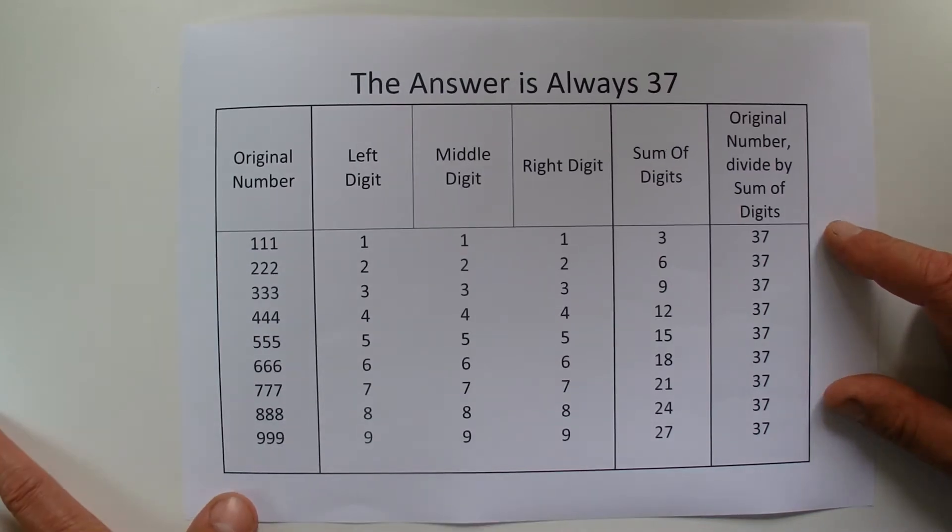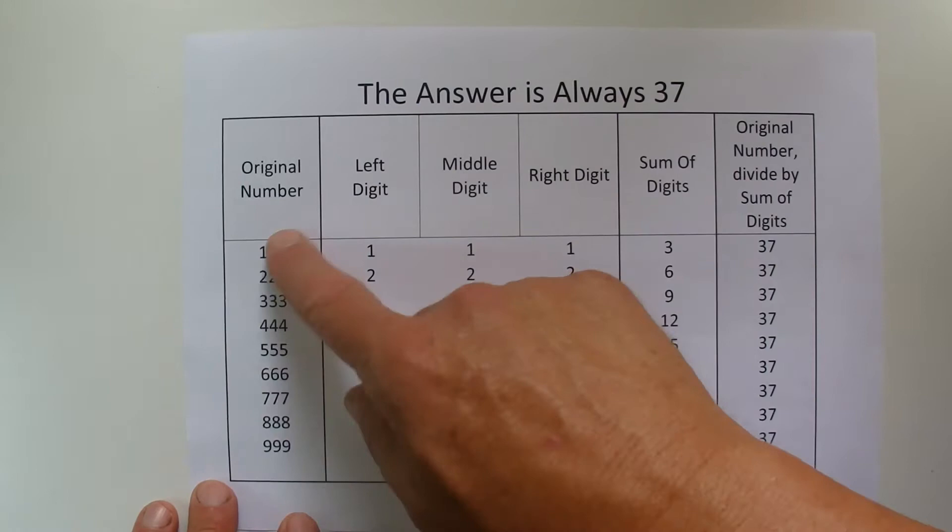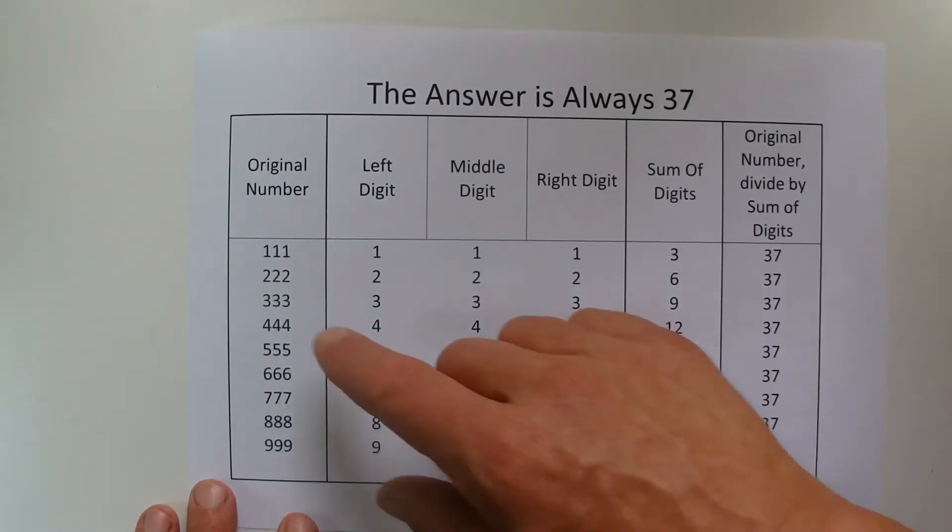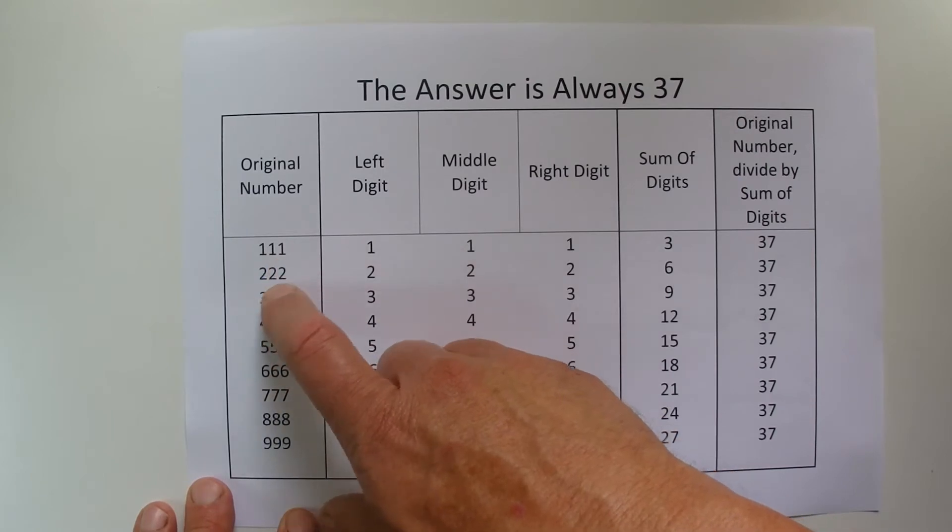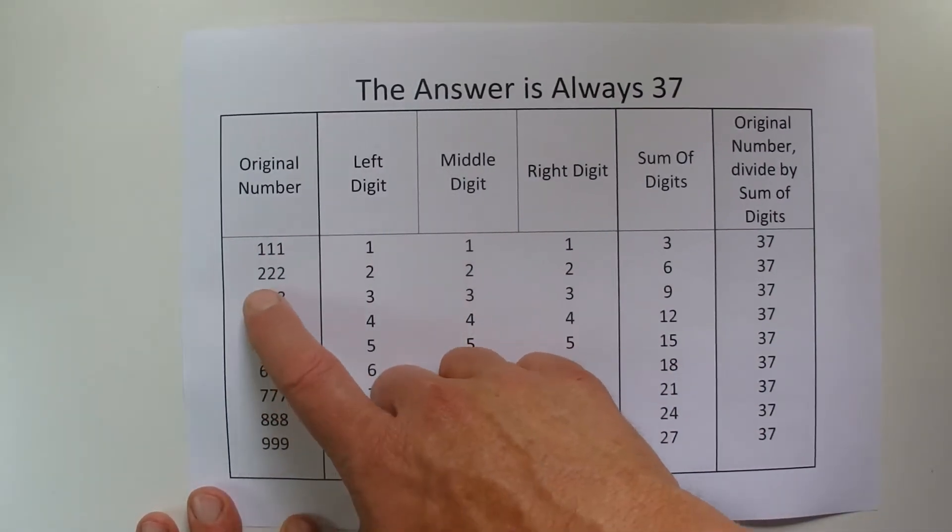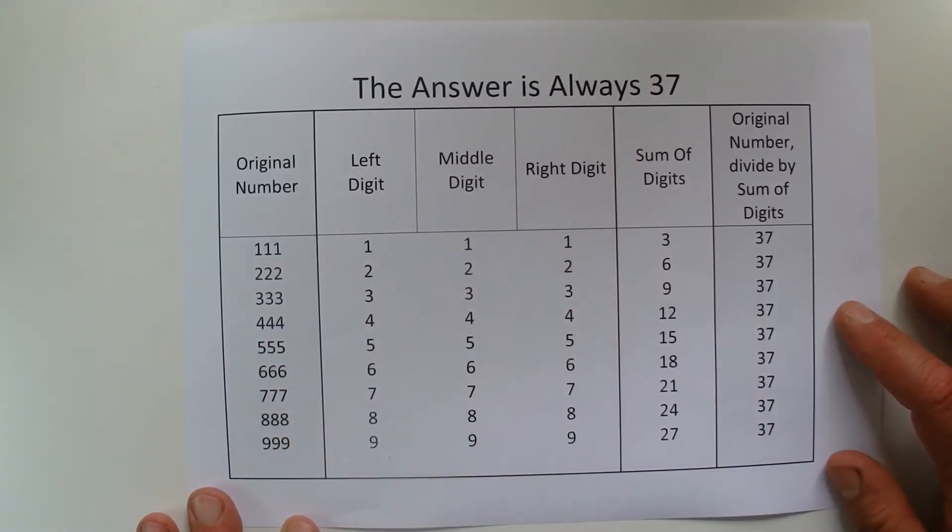Now, I guess the qualification there is that it's not for any three-digit number, but it has to be a three-digit number where all the three digits are the same, such as 111, 222, 333, right through to 999.